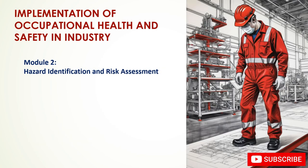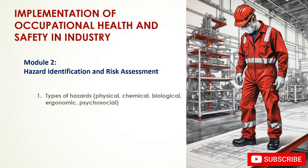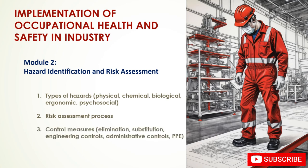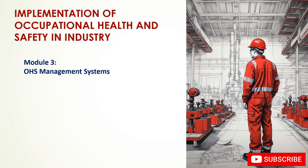Module 2: Hazard Identification and Risk Assessment. This module covers types of hazards — physical, chemical, biological, ergonomic, and psychosocial — as well as the risk assessment process and control measures including elimination, substitution, engineering controls, administrative controls, and personal protective equipment (PPE).